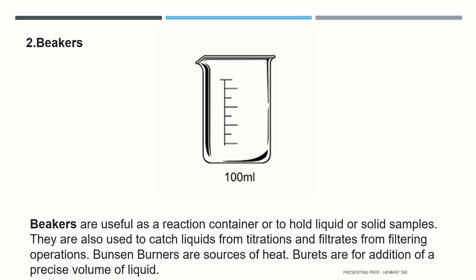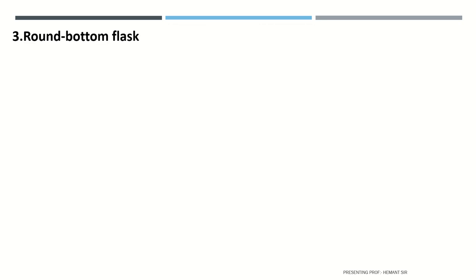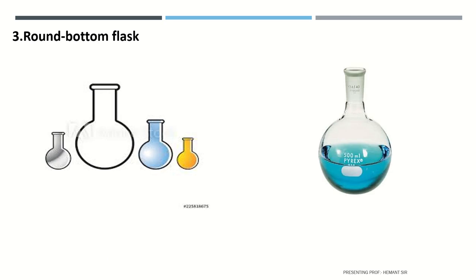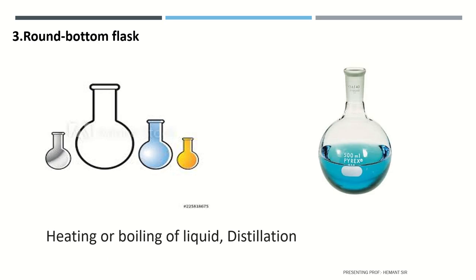Bunsen burners are a source of heat. Burettes are for the addition of a precise volume of liquid. Third is the round bottom flask. It is useful for heating or boiling of liquid and for distillation.